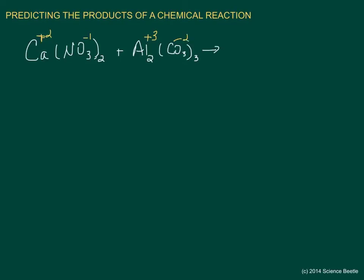Now we know our parts — the positive and the negative. Calcium will come and combine with the negative side of the second compound, and aluminum, which is the cation in the second compound, will combine with the anion of the first compound. Writing our products: the first compound starts with calcium combining with carbonate (CO₃), and the second has aluminum combining with nitrate.